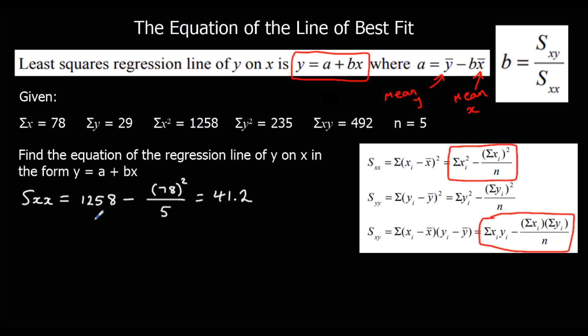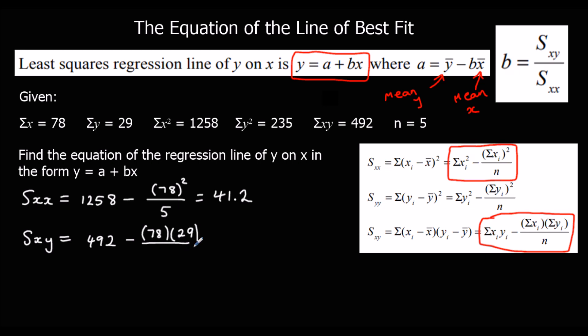And Sxy is the sum of the xy's which is 492, minus the sum of the x's (78) times the sum of the y's (29), over n which is 5. We type that into the calculator and we get 39.6.